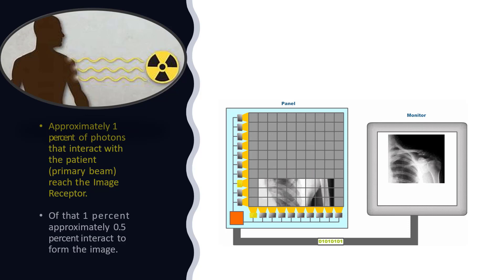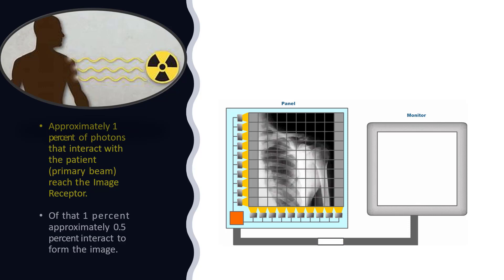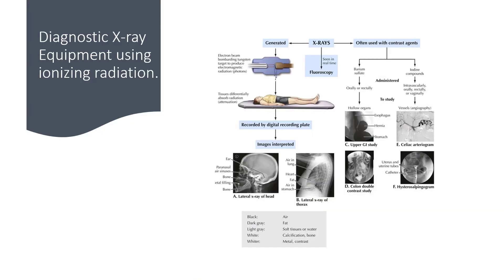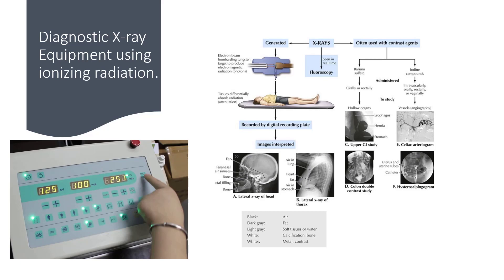Only the photoelectric effect and characteristic radiation caused by absorption and partial absorption will give us the data we need — the intensities we need — to create an image. Let's take a moment to look at the diagnostic x-ray equipment using ionizing radiation. We select the parameters, or the technique, for creating the primary beam of ionizing radiation — the exposure. The exposure is emitted from the x-ray tube, and the energy, the ionizing radiation, interacts with the patient's tissues.